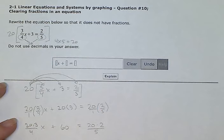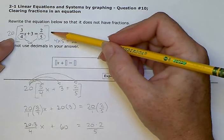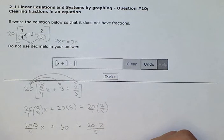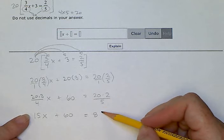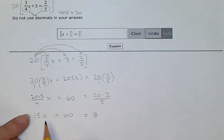40 divided by 5 is 8. Now instead of having this that had two fractions in it, now I have a bigger version of the same equation. 15x plus 60 equals 8. So they're still equal to each other but now I have no fractions. That's why I multiplied by 20 so I can get rid of all the fractions.